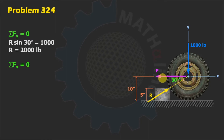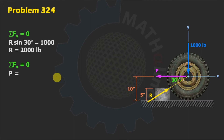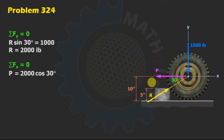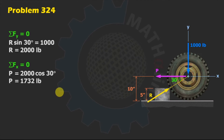Summing forces in the horizontal direction: P equals R cosine 30. Substituting R = 2,000, we get P = 2,000 cosine 30 = 1,732 pounds. This confirms the answer from our graph.